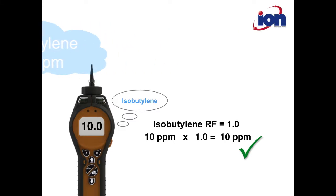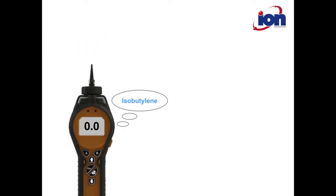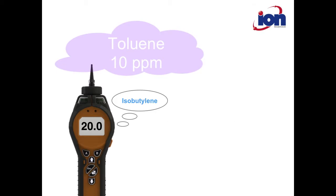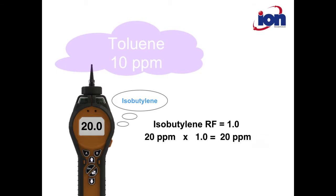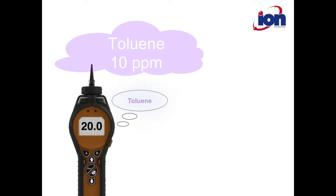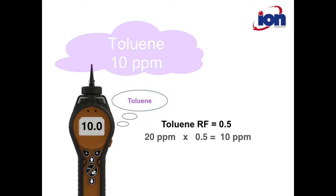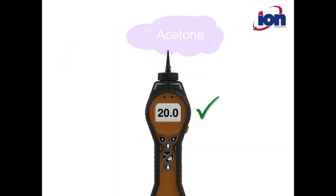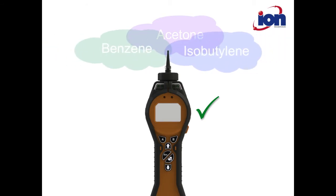If the same instrument is then presented with 10 ppm toluene, the reading will be incorrect, as toluene gives a stronger response than isobutylene to the same concentration. If toluene gas is then selected on the instrument, the toluene response factor is used and the instrument will then read correctly.